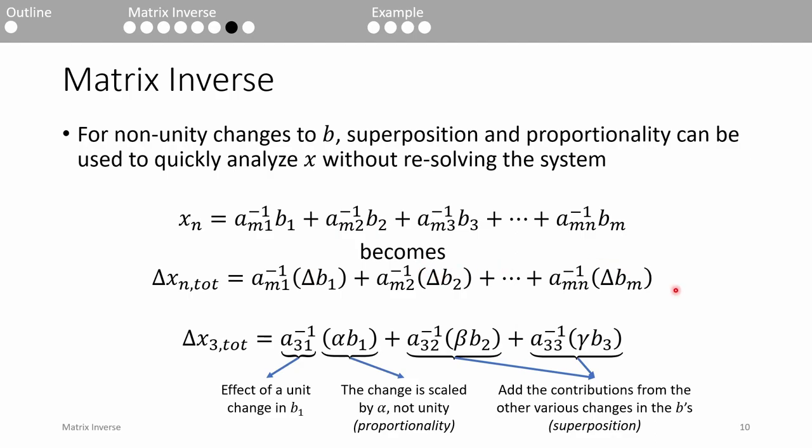For example, let's say there are three elements in the b vector. Element 1 is scaled by alpha, element 2 is scaled by beta, and element 3 is scaled by gamma.